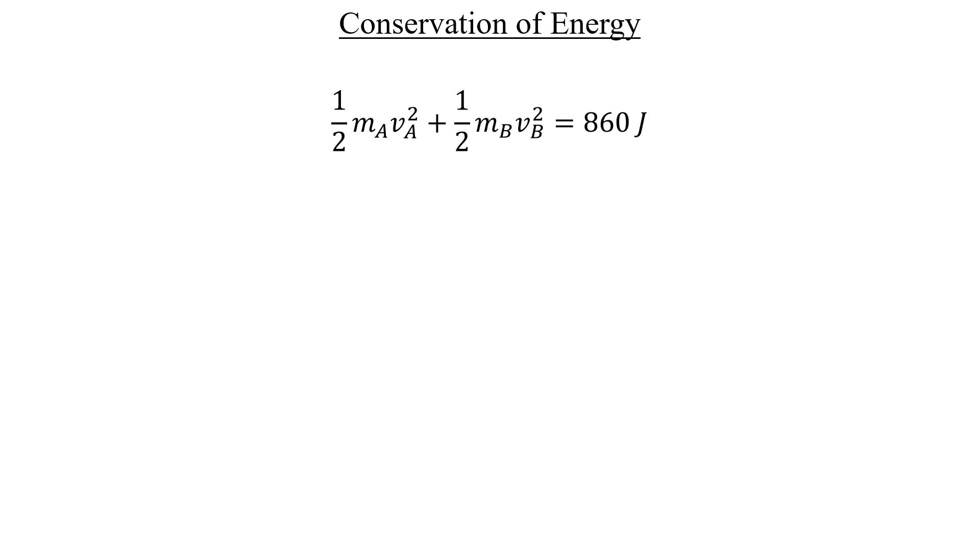We need to plug in the expression for the velocity of A that we just solved for and then square it. Doing so will eliminate the mass of A outside the parentheses in the first term and result in the following.